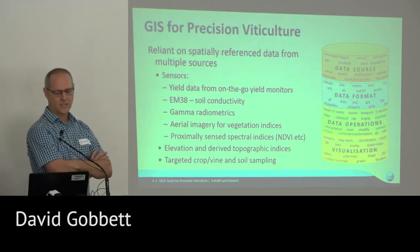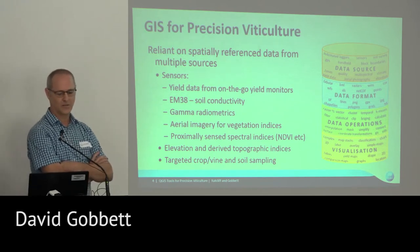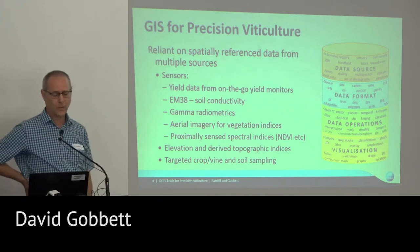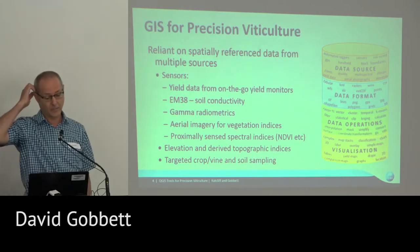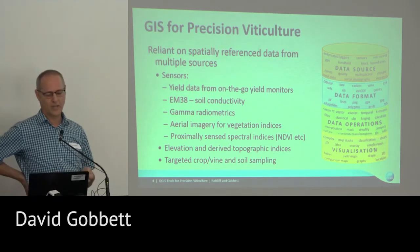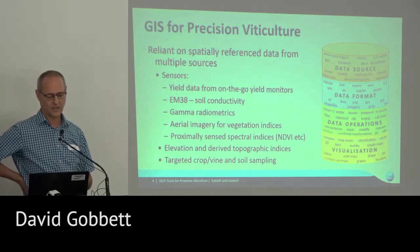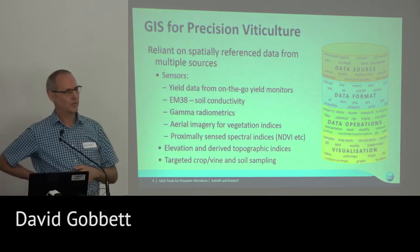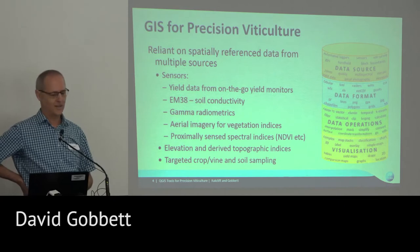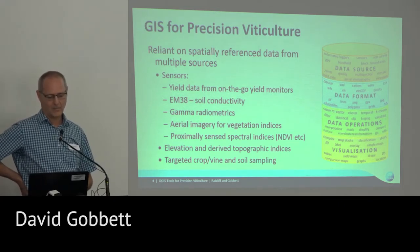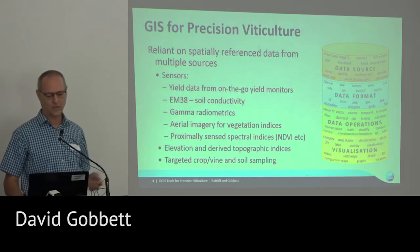GIS in precision viticulture: we're reliant on spatially referenced data so GIS is quite central to what we do. We work with a number of different sensors — yield monitors, EM38 soil conductivity mapping, gamma radiometrics. We also use airborne imagery as well as proximally sensed crop spectra to generate NDVIs and so on. We use elevation maps; we do our own RTK-grade survey, so we're affected by datum issues. And we do targeted sampling of crops and soils within the blocks we're working in.